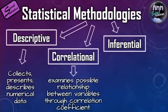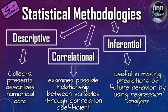Correlational statistical methodology examines possible relationships between variables through the correlation coefficient. So while descriptive simply stops at describing, correlational already examines possible relationships — for example, the relationship between one variable and another, an x and y relationship. Inferential statistical methodology is useful in making predictions of future behavior using regression analysis.